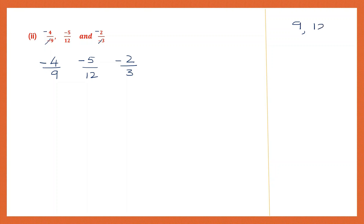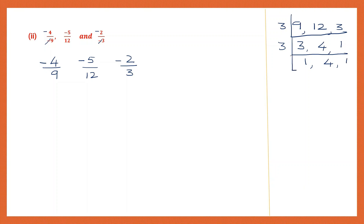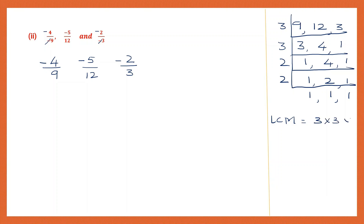Let's find the LCM of 9, 12 and 3. All three are divisible by 3: 3 threes are 9, 3 fours are 12, 3 ones are 3. Continue with 3 again: 3 ones are 3, bring down 4 and 1. Then use 2: 2 twos are 4, bring down 1. Again use 2: 2 ones are 2 and 1. So LCM equals 3 into 3 into 2 into 2 — that is 9 into 4 — equals 36.